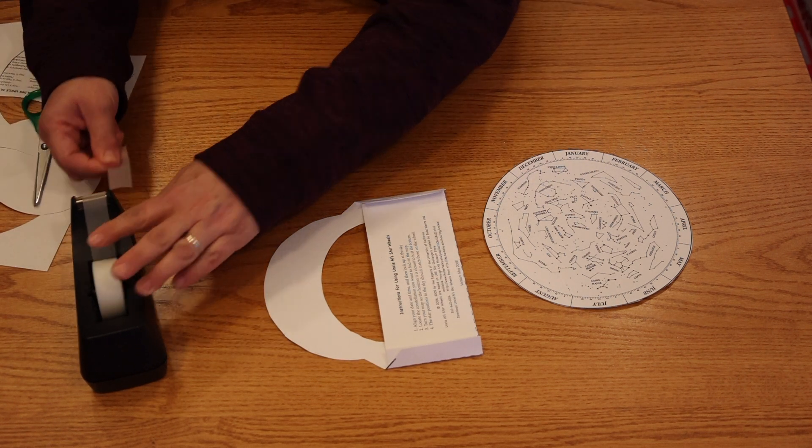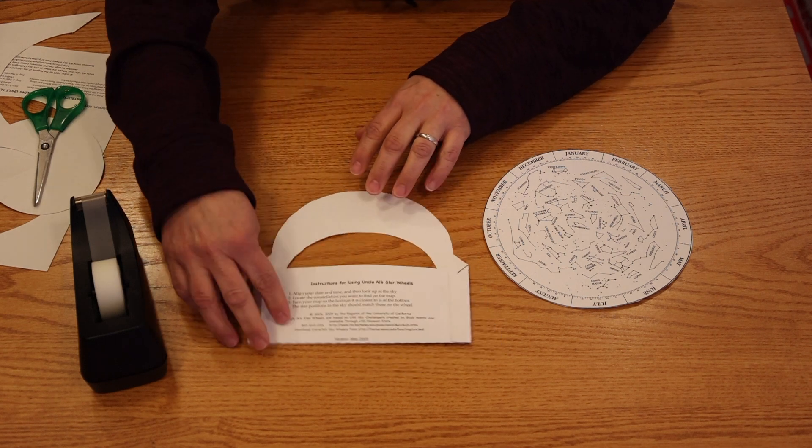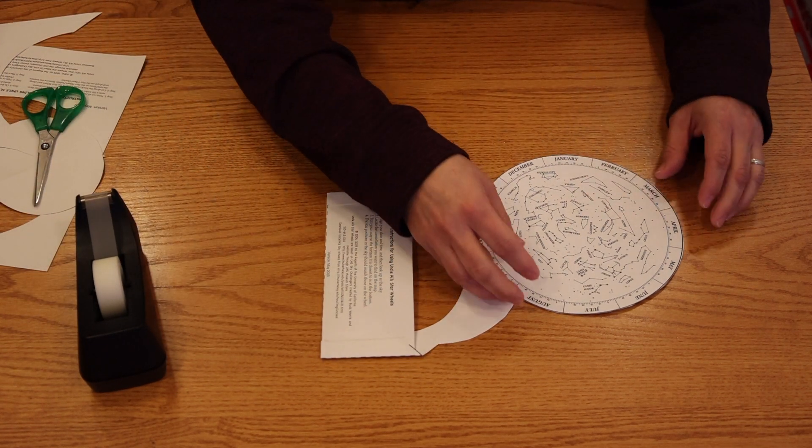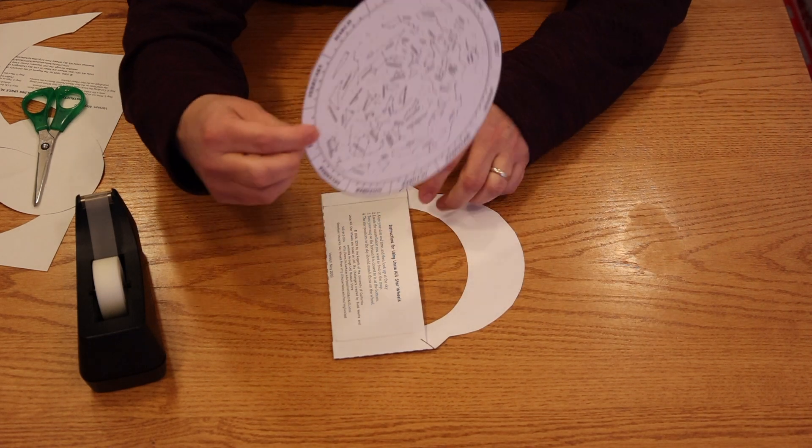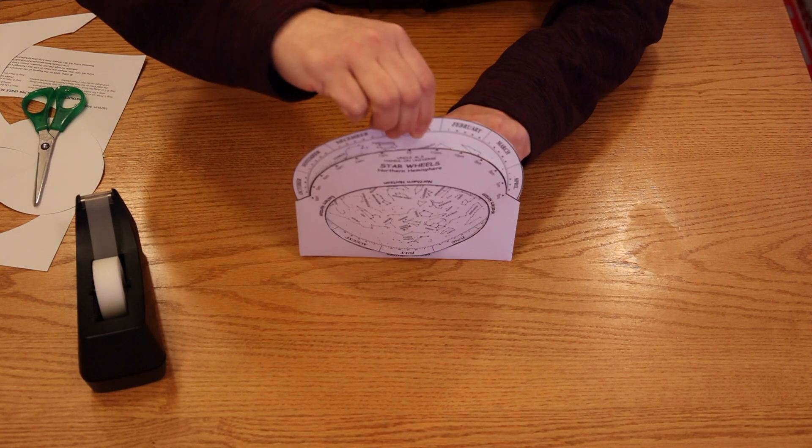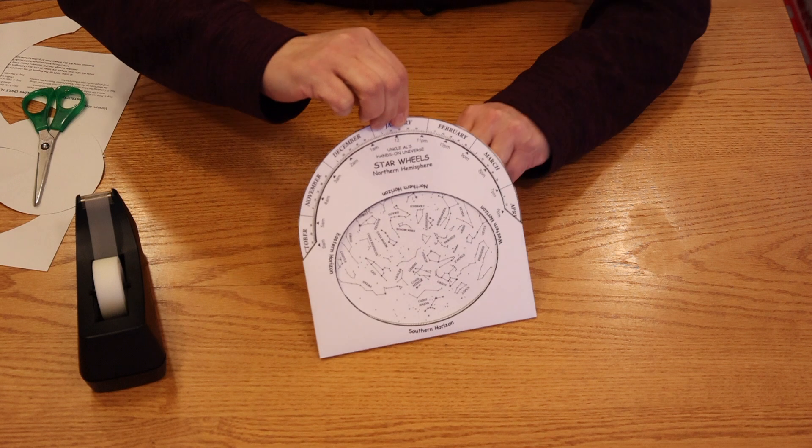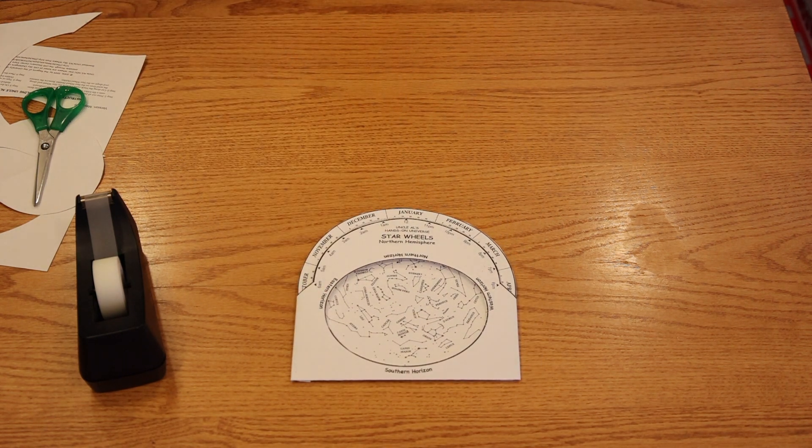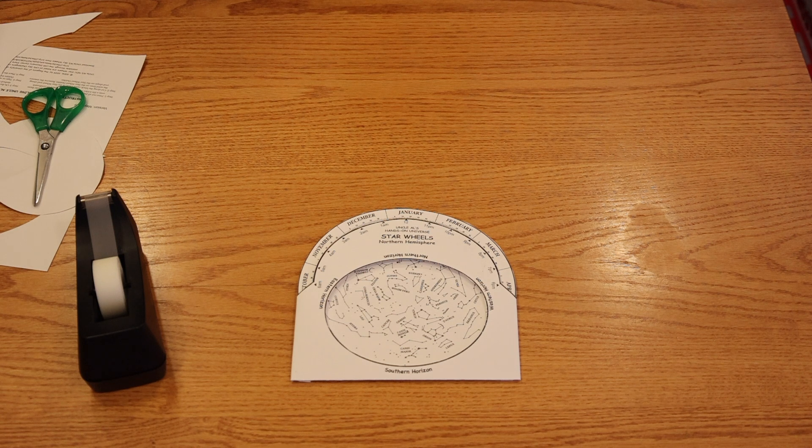Now get your tape and take a little piece of tape and hold down each one of those sides. You've made a little pocket. Take your star wheel, your star map and slide it inside of that pocket so that you can see the stars and constellations in that oval that you cut out. This is a planisphere.